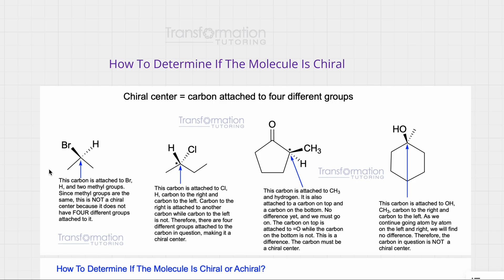How do we check and find chiral centers in our molecules? First, we will look at the carbons. If your carbon is attached to two hydrogens or three hydrogens, automatically it is out — it's not a chiral center. Let's go ahead and look at this molecule.